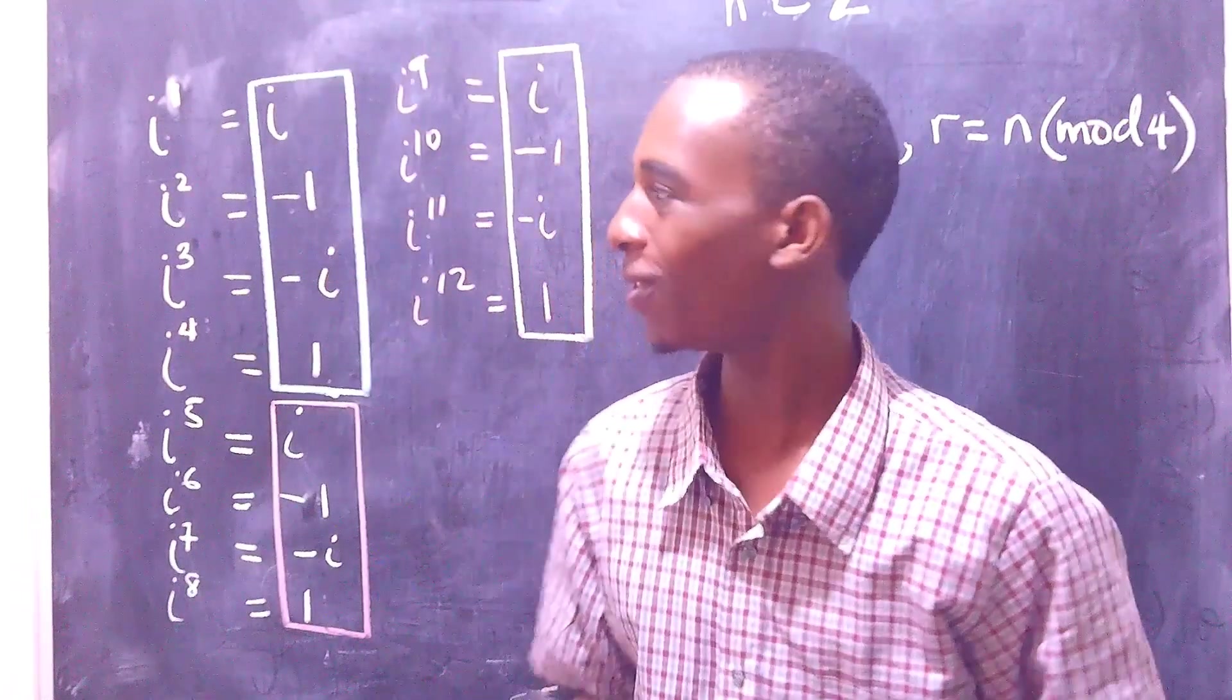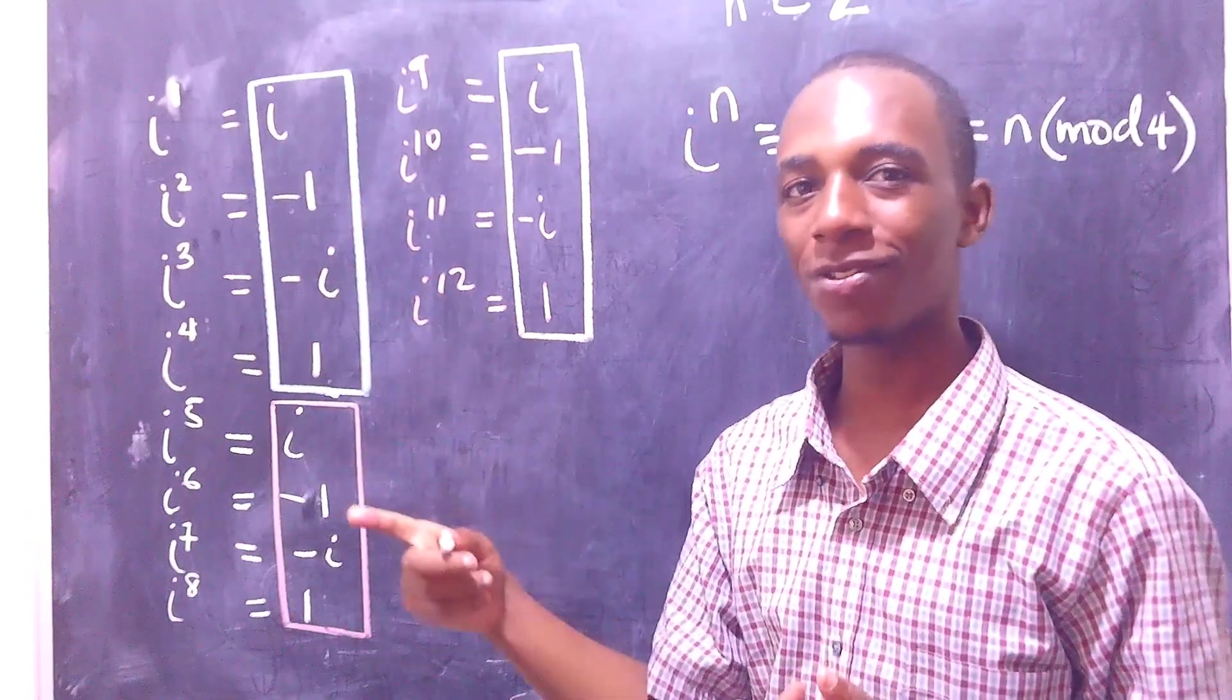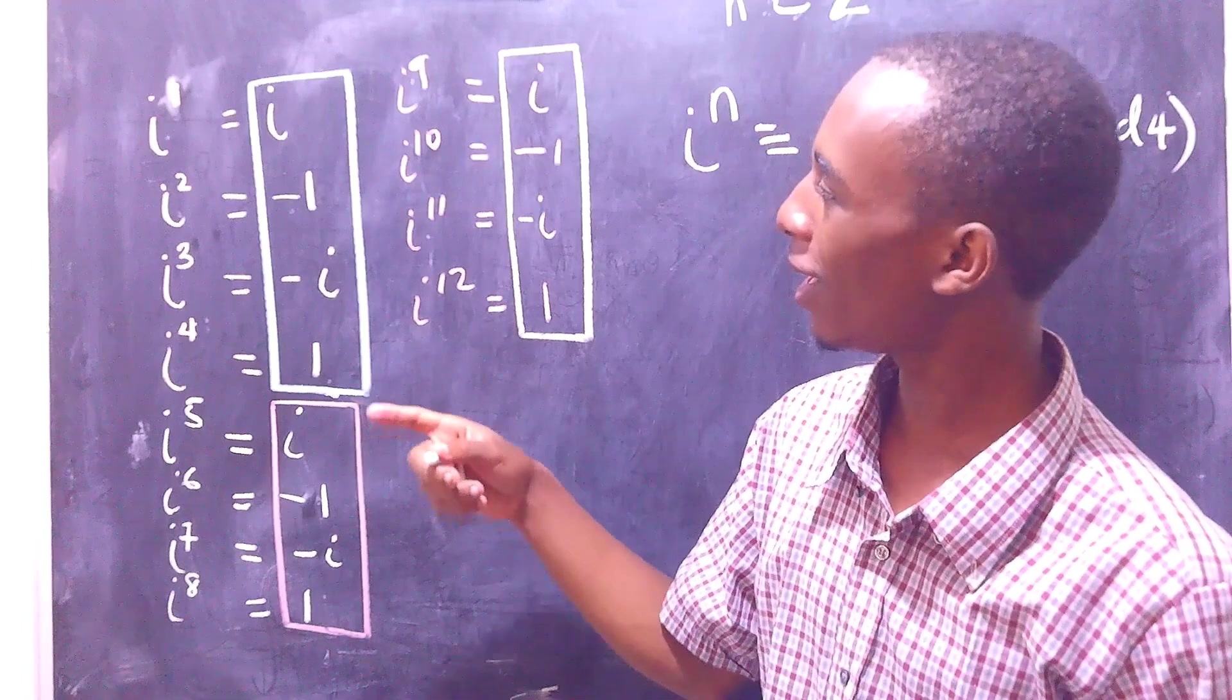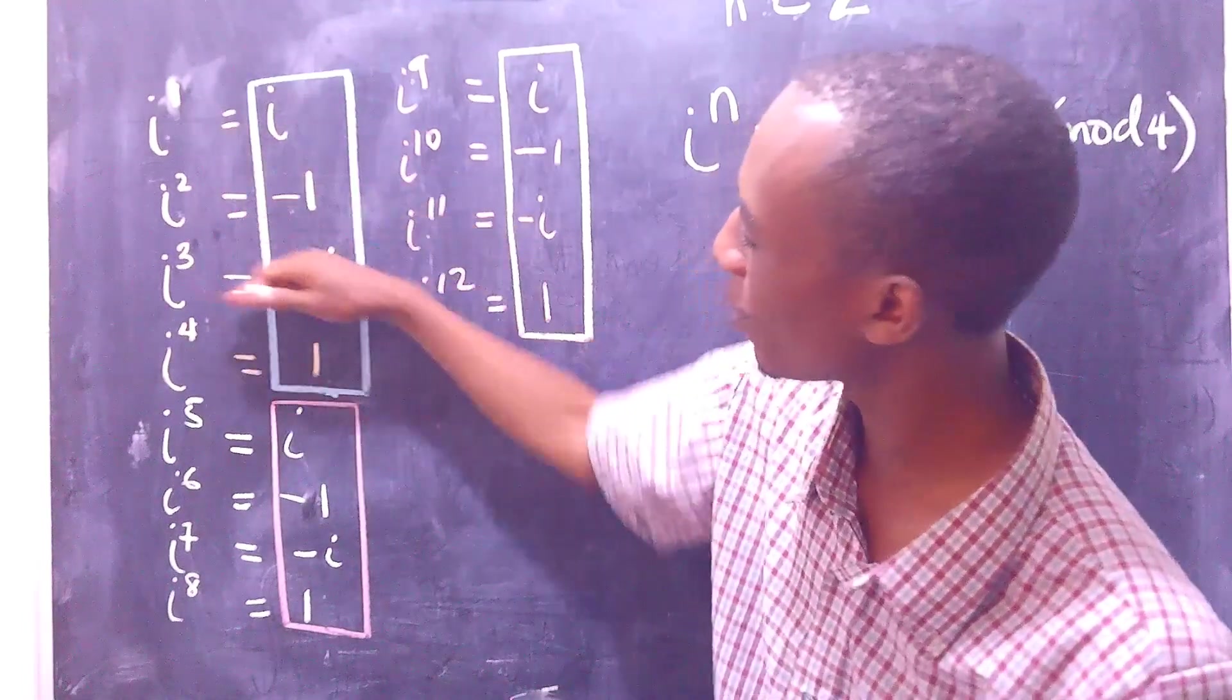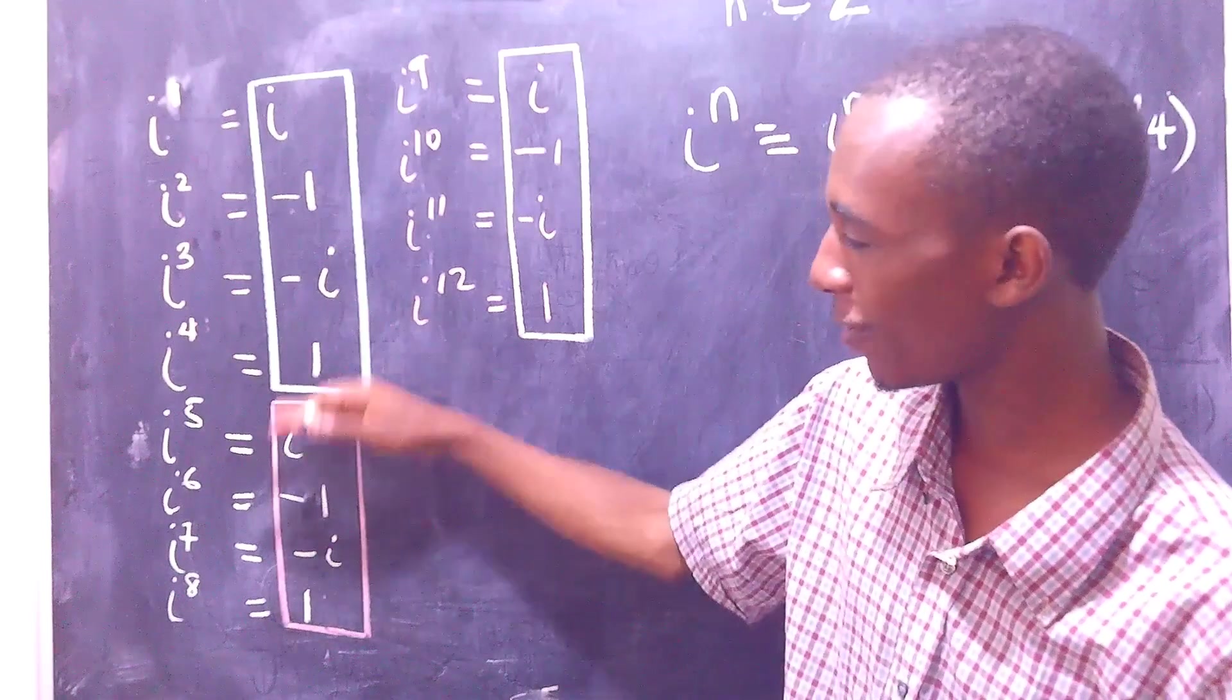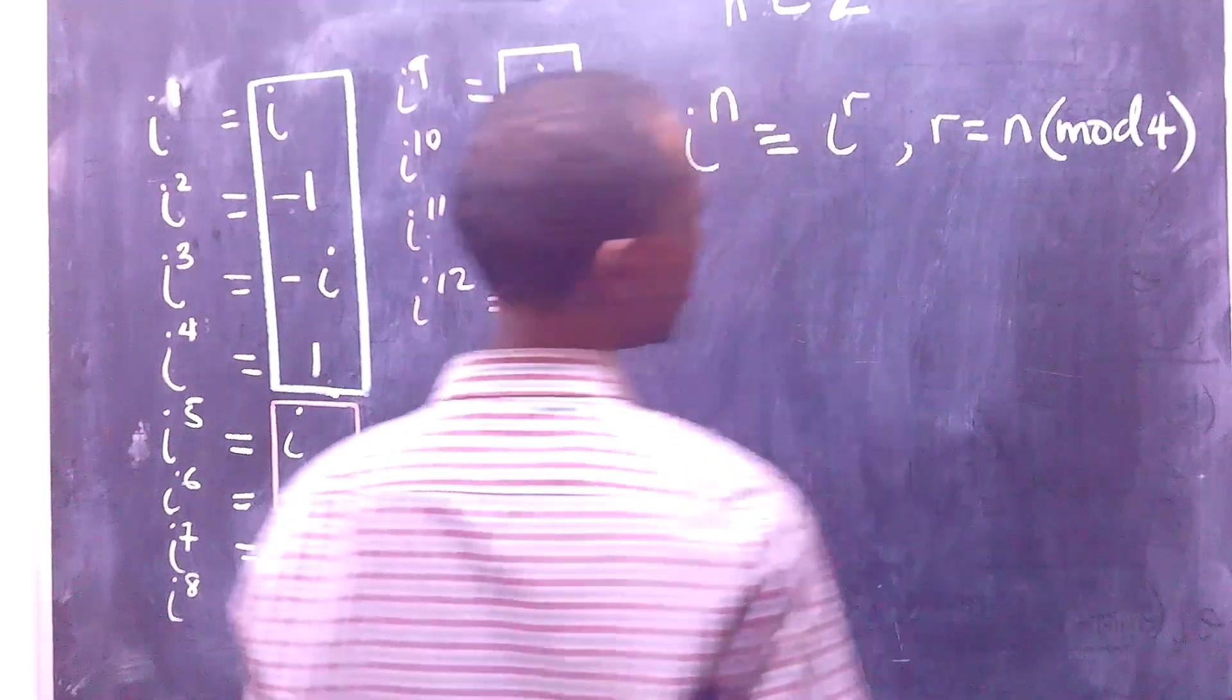Now, why do I write it in mod 4? That's simply because these answers are repeating themselves after four iterations. So you have 1, 2, 3, 4, and boom, the pattern repeats again. After four times, it repeats again. So there we have it.